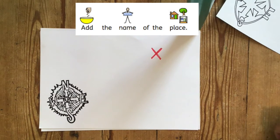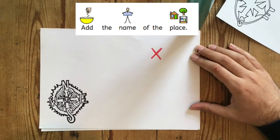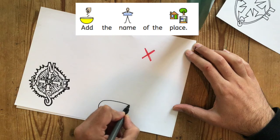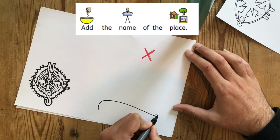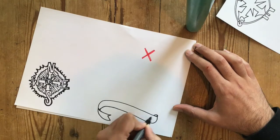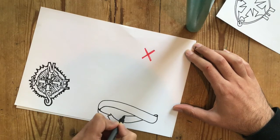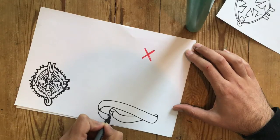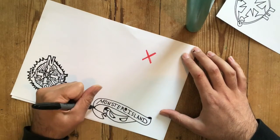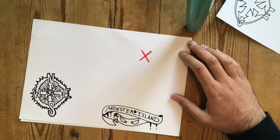And the one other thing that you have to add is the name of the place. Where is it? Your explorers want to know. I'm going to call my map Monster Island.